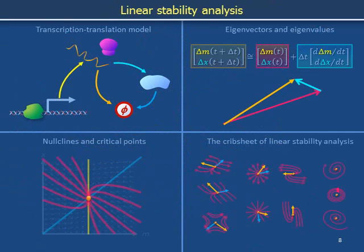In this video, we represented the dynamics of the transcription translation model by drawing nullclines and identifying a critical point in the phase plane. Sketching nullclines, critical points, quivers, and trajectories in the phase plane is called drawing a phase portrait. In the next video, we show how eigenvector eigenvalue analysis can provide a complete analytic description of the dynamics of the system.